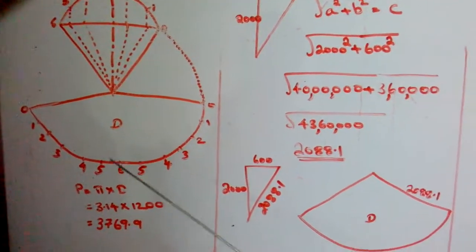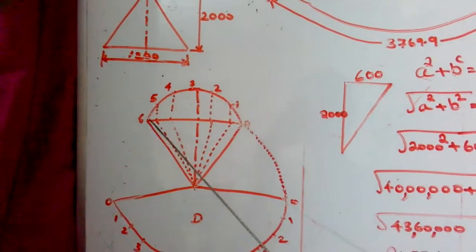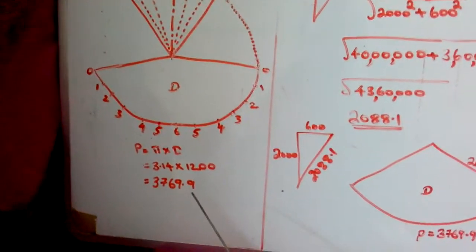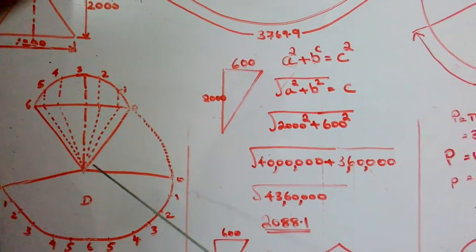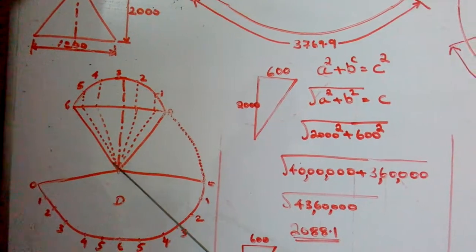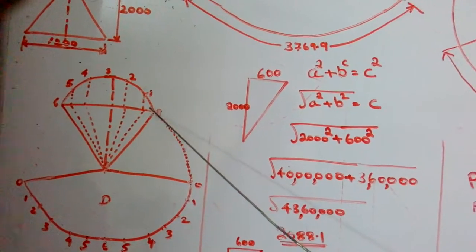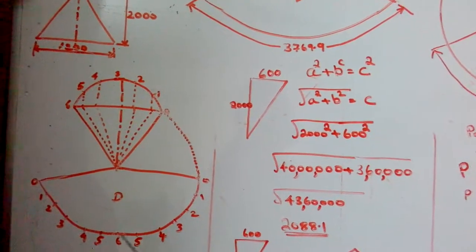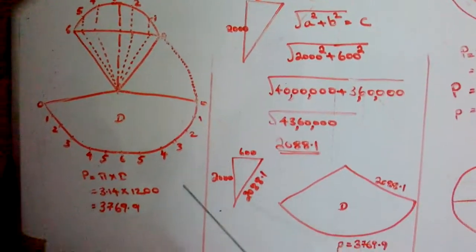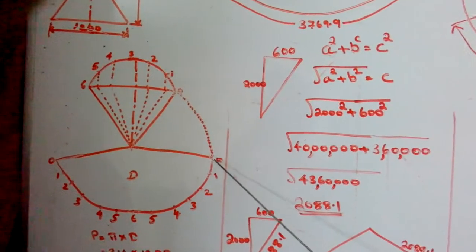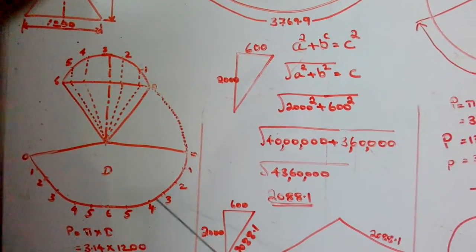P = πD is the formula. π is 3.14, D is the diameter which is 1200. When we calculate, we get 3769.9. So after making one round from the starting point, we keep one compass leg there and draw using the true length. We made a curve, and our development starts from there. The perimeter measurement is 3769.9, which we mark using a flexible tape with the help of one more person.